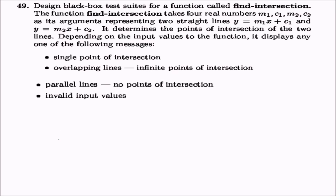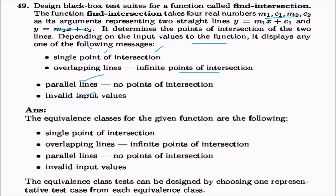Design a black box test suite for a function 'find_intersection' taking m1, c1, m2, c2 representing two lines y = m1x + c1 and y = m2x + c2. It displays: single point of intersection, overlapping lines (infinite intersections), valid parallel lines (no intersection), or invalid input values. Equivalence classes are built from these four conditions, and representative test cases are chosen for each.